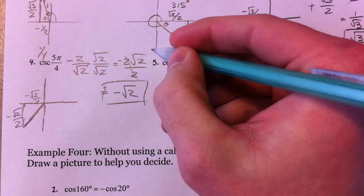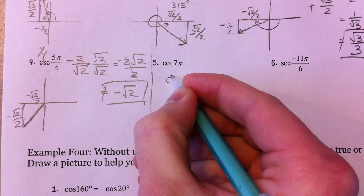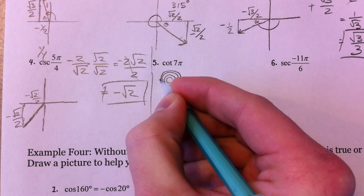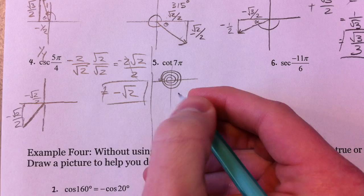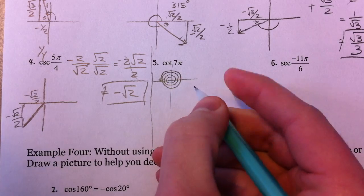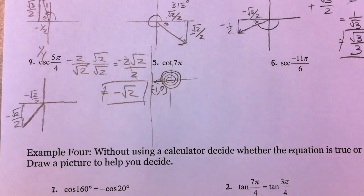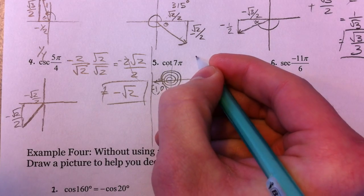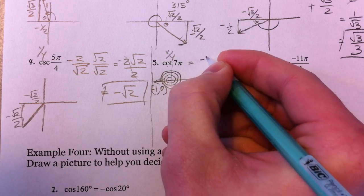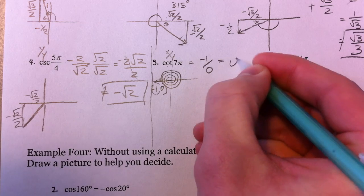Now we're dealing with 7π. 2π is one time around: 4π, 6π, and 7π is going to be 180 — we've gone 3 and a half times around. So we're dealing with it straight across: this is negative 1 comma 0. Cotangent is x over y. The x value is negative 1 over the y value of 0, and so this is undefined.